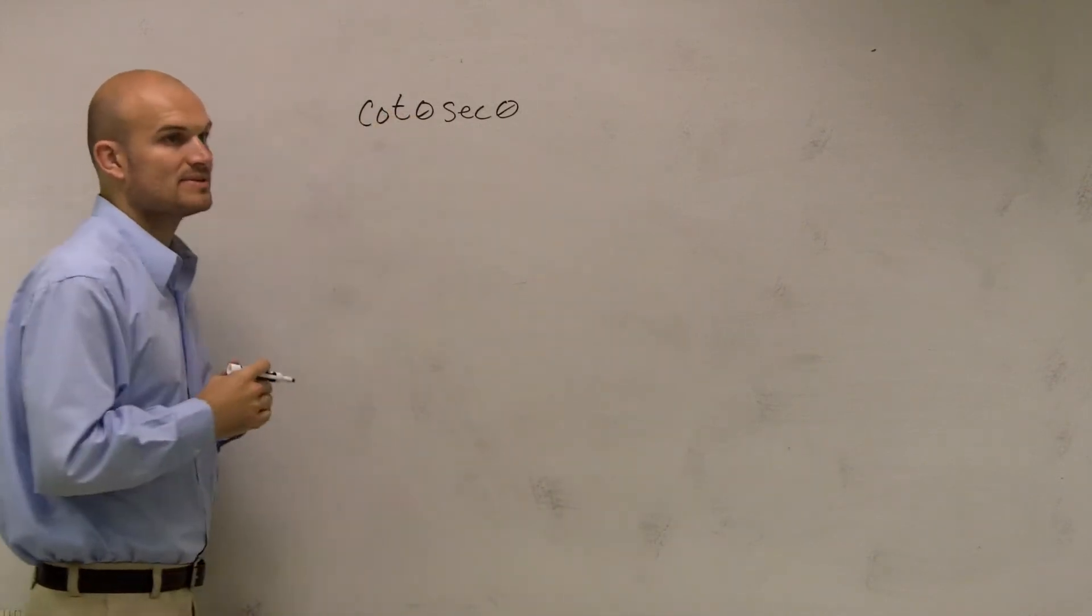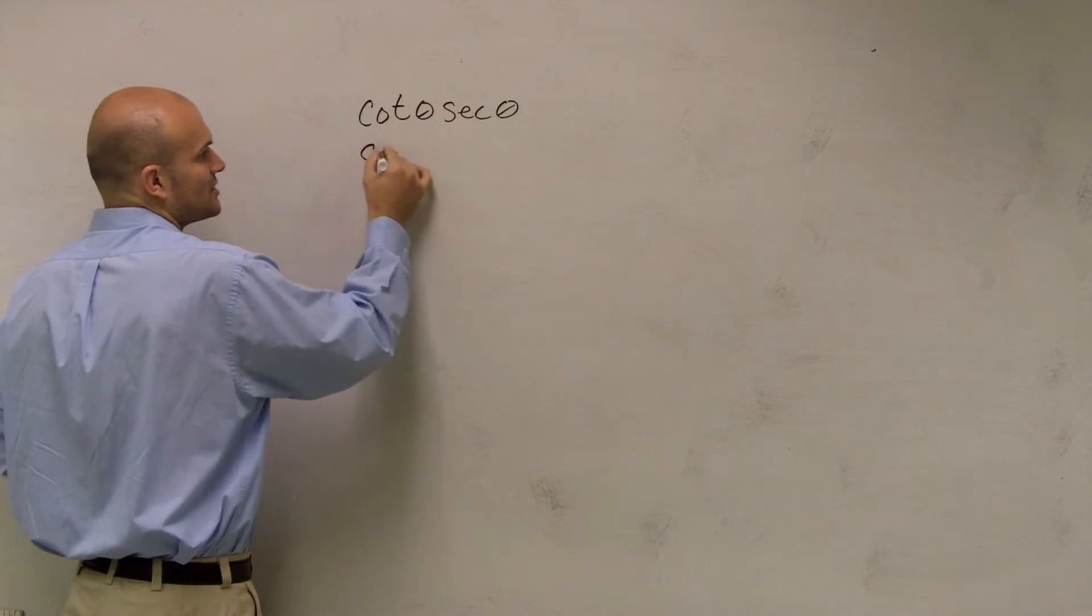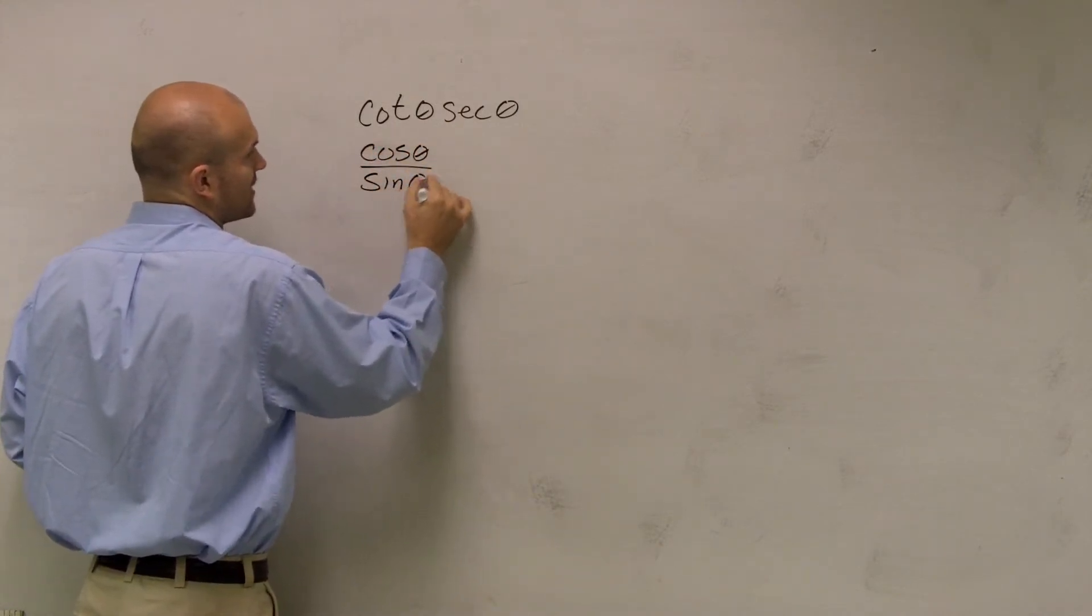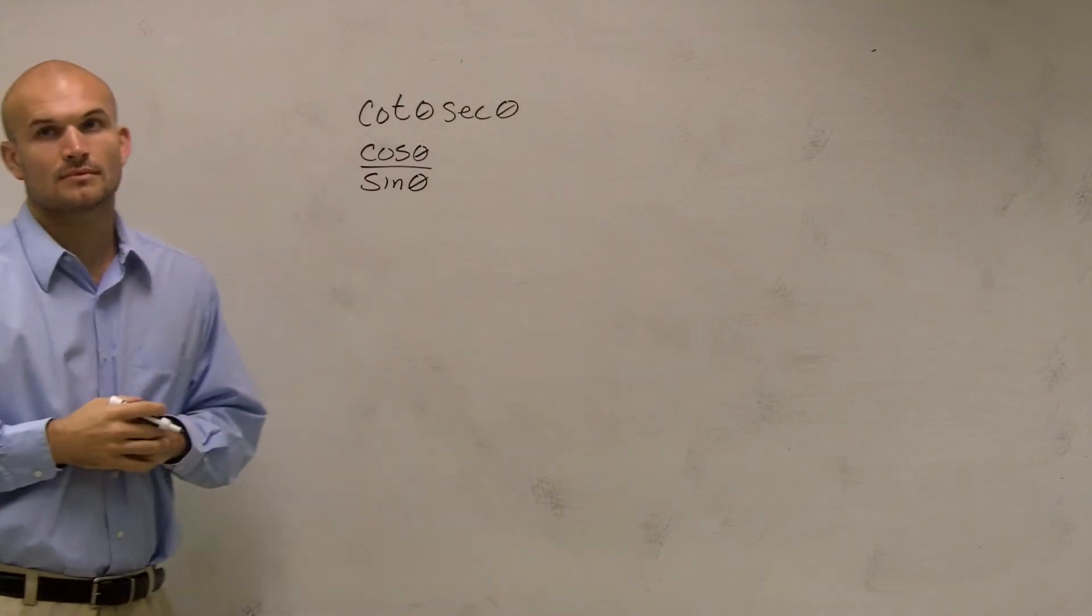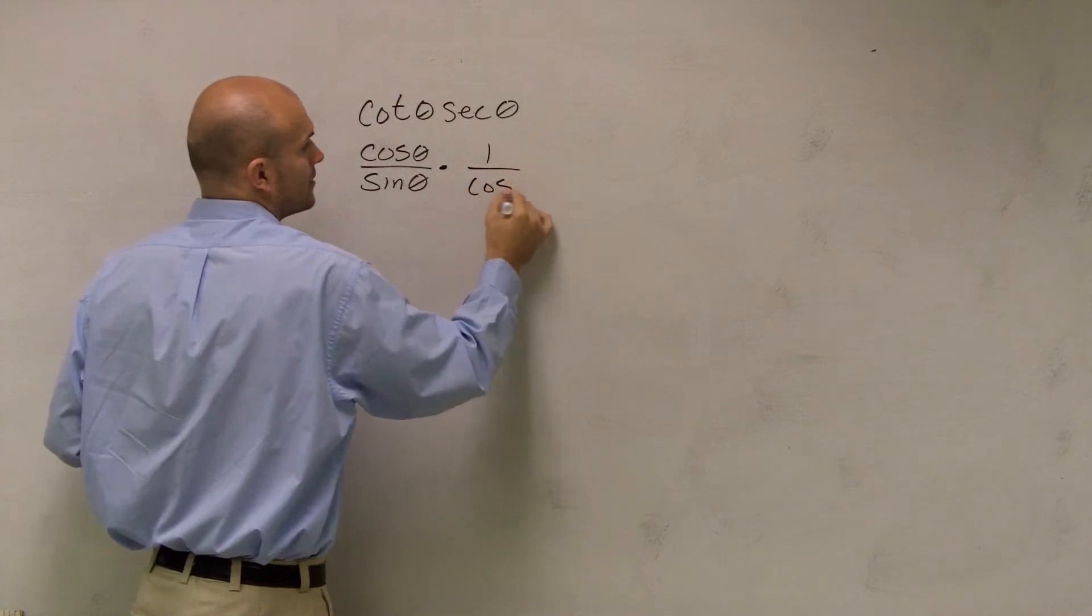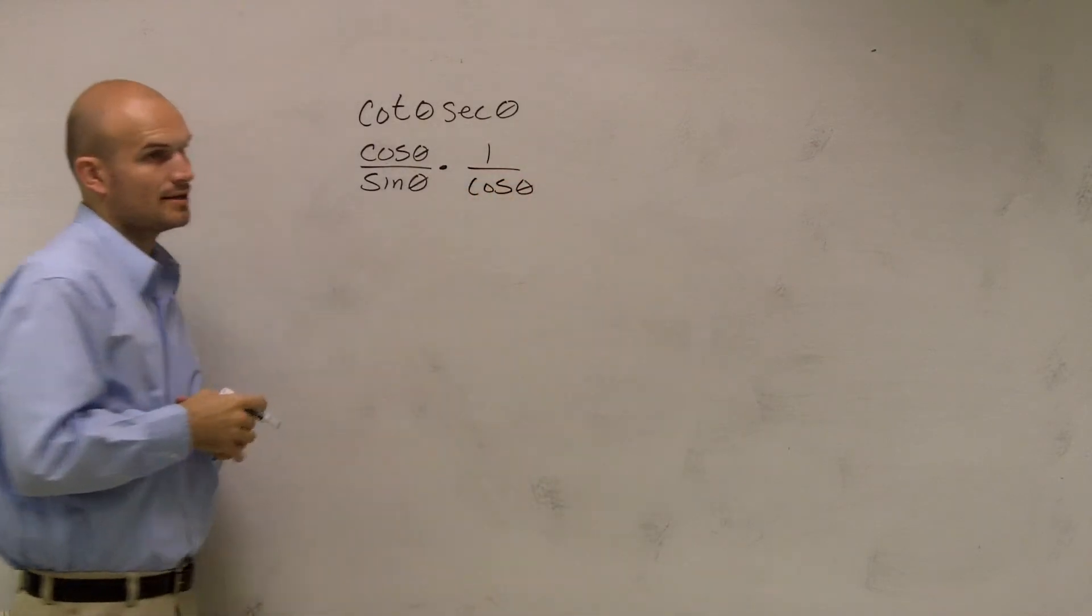So if you remember, I can represent cotangent as cosine of theta over sine of theta. Correct? And I can also represent secant as 1 over cosine of theta.